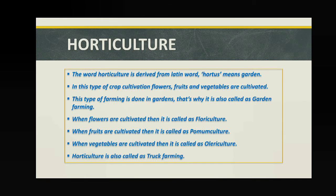Now, horticulture. It is one type of crop cultivation and agriculture activity. The word 'horticulture' comes from the Latin word 'hortus,' meaning garden. This type of crop cultivation is mainly done in gardens, cultivating flowers, fruits, and vegetables. It is also called garden farming. When flowers are cultivated in horticulture, it is called floriculture; cultivation of fruit is called pomiculture; and cultivation of vegetables is called olericulture.